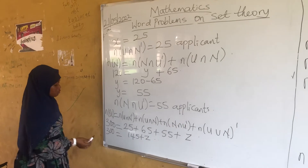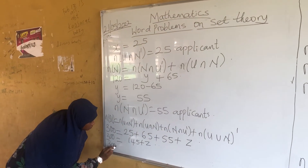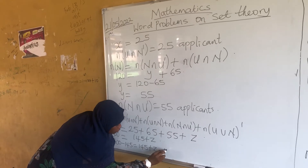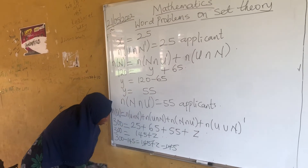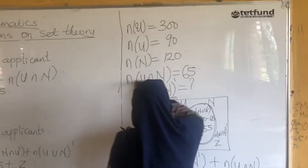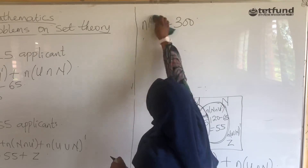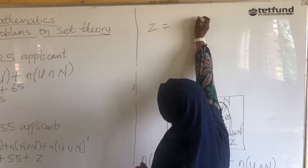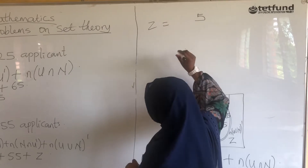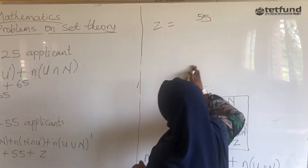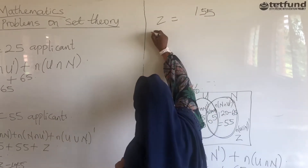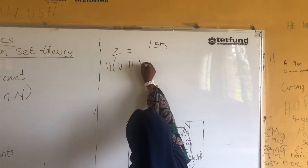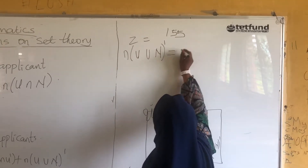To make Z the subject of the formula, we subtract 145 from both sides. 145 plus Z minus 145 — the 145s cancel. So Z equals 300 minus 145, which is 155. Therefore, those that do not have any of the two certificates, i.e., U union N complement, is equal to 155.